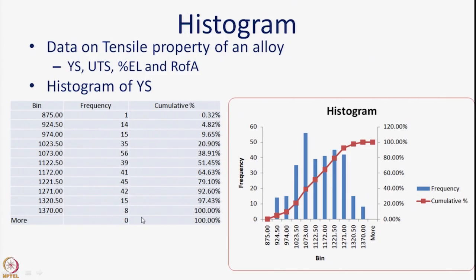The cumulative frequency is shown as a running total — for example, 15 out of 311, then 15 plus 15 equals 30 out of 311, and so on — representing the cumulative percentage of data below each bin value. The resulting histogram shows a bar at each bin whose length corresponds to the frequency. The red curve is the cumulative frequency curve, with the right y-axis showing cumulative percentage and the left y-axis showing frequency.